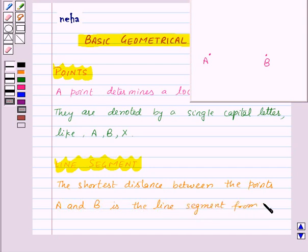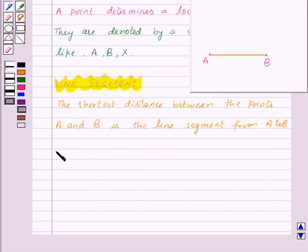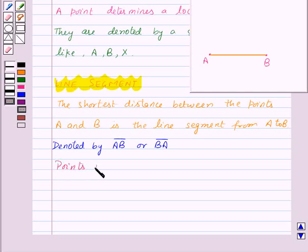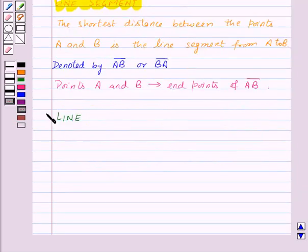From A to B. So this is the line segment from A to B, and it is denoted by line segment AB or line segment BA. Also, the points A and B are known as the endpoints of line segment AB.